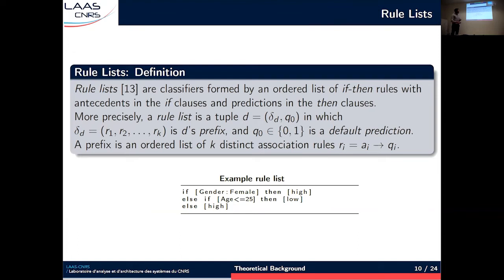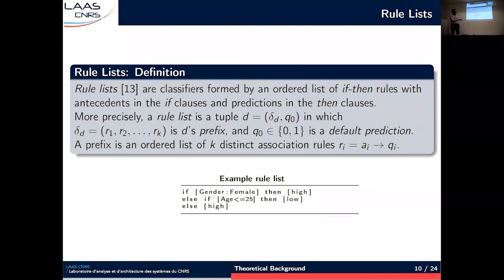For this work, we are interested in rule list models. Rule lists are considered interpretable by design because you can understand the logic just by reading them. Rule lists are classifiers formed by an ordered list of if-then rules, with antecedents in the if clauses and predictions in the then clauses. The set of ordered rules is called a prefix, and after the prefix there is a default decision. To classify an example given a rule list, you apply the rules of the prefix sequentially: if a rule matches, you return its associated prediction; if none of the prefix rules match after evaluation, you return the default prediction.